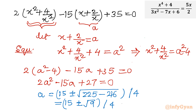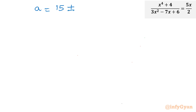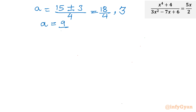So the value of a is 15 plus or minus 3 over 4. Taking the plus sign: 18 over 4 gives 9 over 2. Taking the minus sign: 12 over 4 gives 3. So we have two values: a equal to 9 over 2, and a equal to 3.